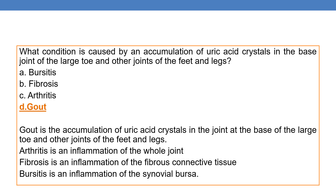What condition is caused by an accumulation of uric acid crystals in the base joint of the large toe and other joints of feet and legs? A condition of accumulation of uric acid crystals is called gout. So the correct option is D. Gout is the accumulation of uric acid crystals in the joint at the base of the large toes and other joints of feet and legs.